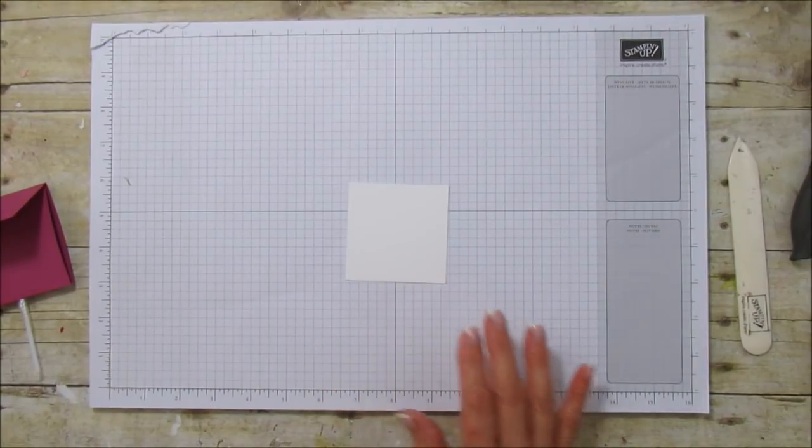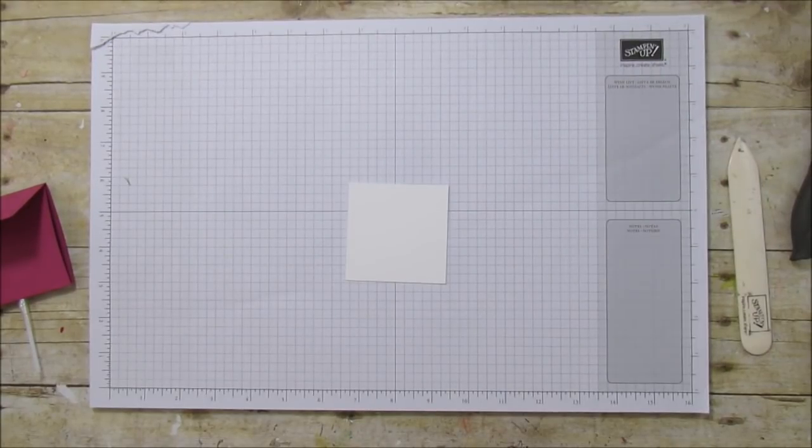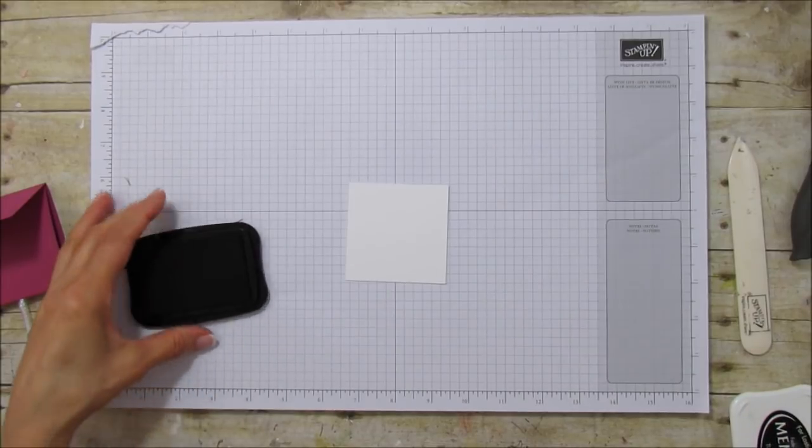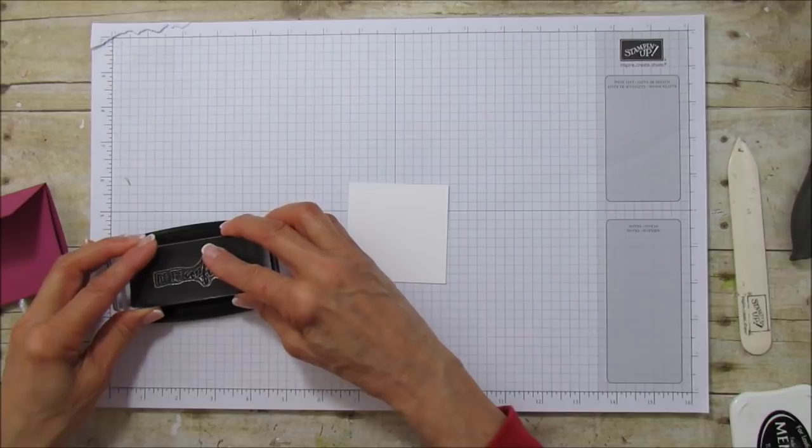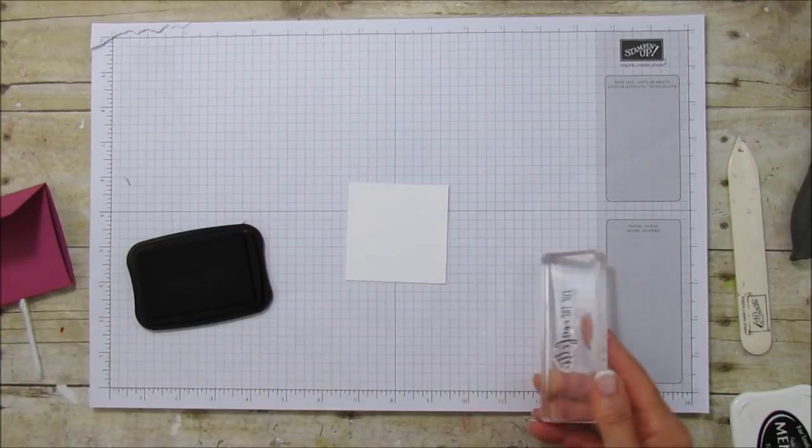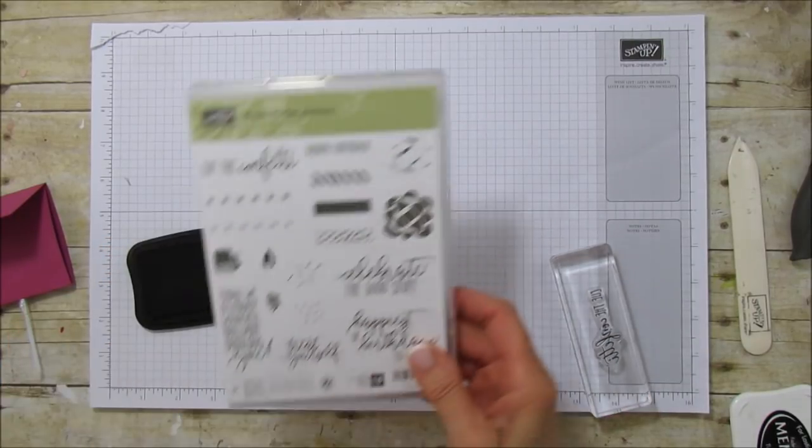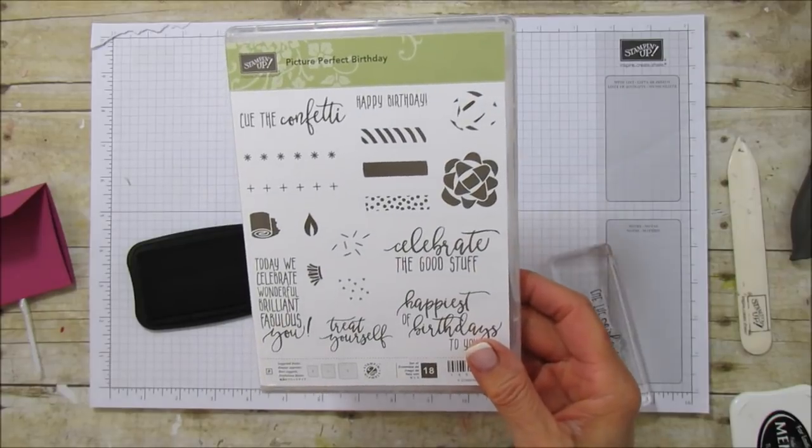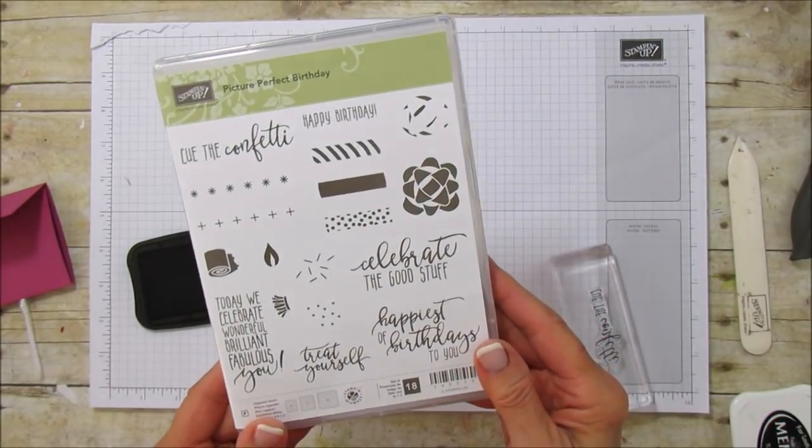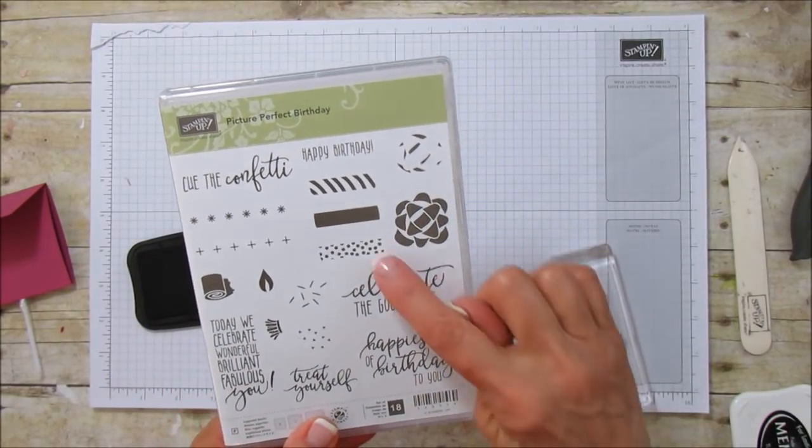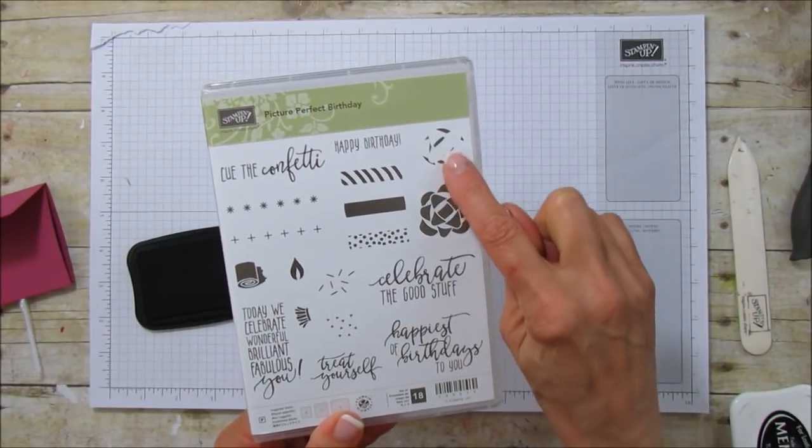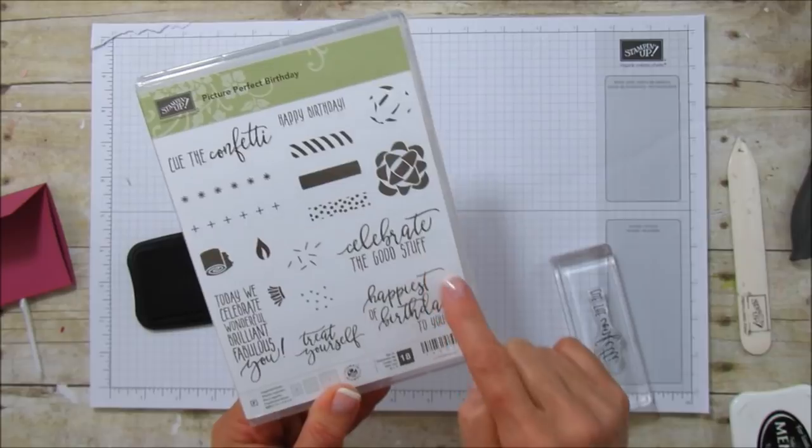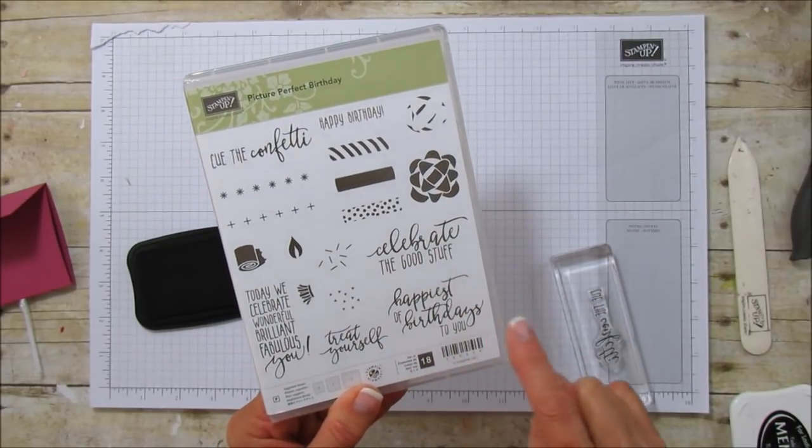I'm going to use my memento black and it says cue the confetti. It's so cute, it is from this Picture Perfect Birthday stamp set and I love this set, it's so perfect for birthdays. These are little candles, it's got the little blower here, a bow, and then all the sentiments. I love the way the sentiments are written with the cursive writing, so that's the stamp set.